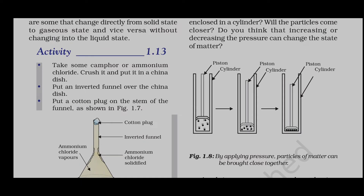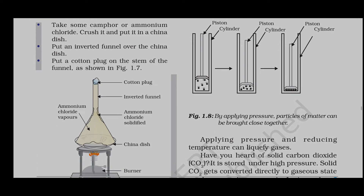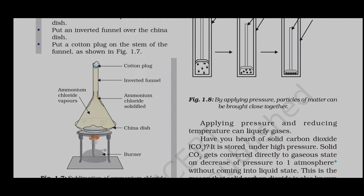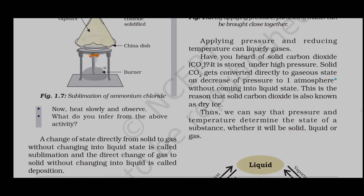Take some camphor and ammonium chloride. Put it in a tin and place an inverted funnel over the tin. Put cotton on the stem of the funnel. Now heat slowly and observe what happens.